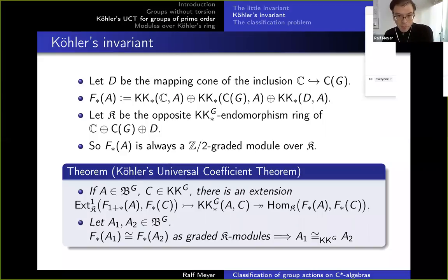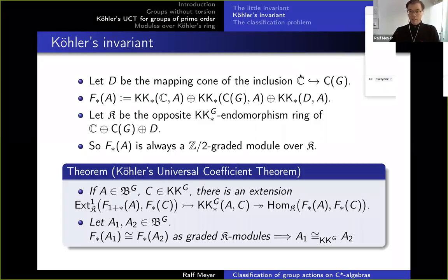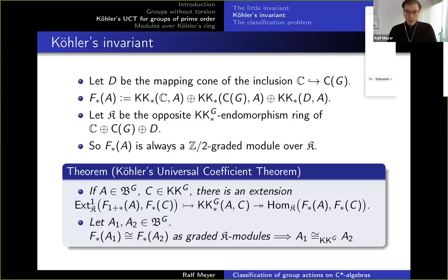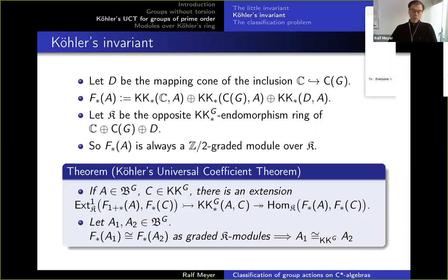Koehler's invariant has one more piece: I take the mapping cone of the inclusion of the complex numbers into C(G), and I add this third piece to my F*(A). This gives a kind of three-by-three matrix ring — I again look at the KKG endomorphisms of the direct sum of my three generators. The invariant F*(A) is a Z₂-graded module over this ring K, by definition.